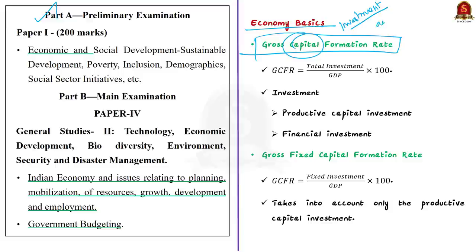The syllabus regarding this editorial is displayed on screen. To understand the editorial better, we must know some basic economic terms. The first one is the gross capital formation rate. Here, capital is nothing but investment. Gross capital formation is the amount of investment made in an economy in relation to the total GDP of the economy. When expressed as a percentage, it is called the gross capital formation rate, calculated as investment divided by GDP multiplied by 100.